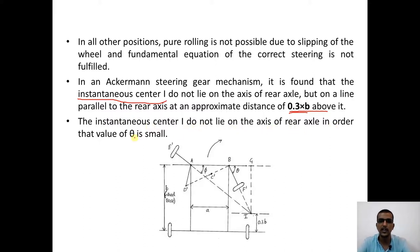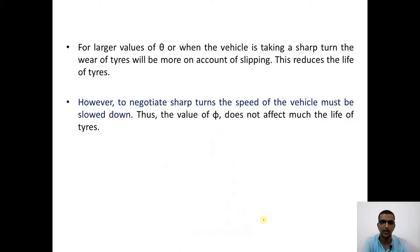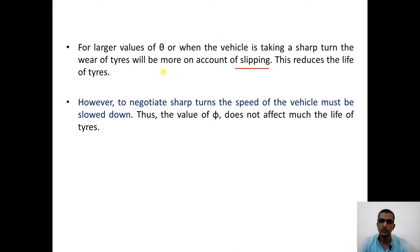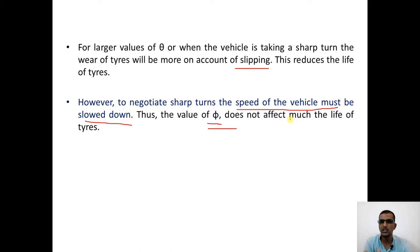The Ackerman steering gear mechanism does not satisfy the fundamental equation of steering, and the instantaneous center I does not lie on the axis of the rear wheel. For larger values of theta — sharp turns — the wear of the tire is more on account of slipping. However, to negotiate sharp turns the speed of the vehicle must be reduced, and most drivers do reduce speed. When speed is reduced there is less wear and tear of the tires, so the value of theta does not affect tire life as severely. This is one reason why the Ackerman mechanism, though not ideal, is still widely employed.